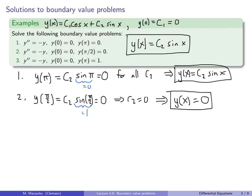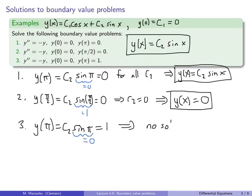For the third BVP, y(π)=1: C₂·sin(π) = C₂·0 = 0 ≠ 1, so there is no solution. Three very similar boundary value problems: one has infinitely many solutions, one has a unique solution, and one has no solutions. This is a very different situation from initial value problems.